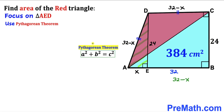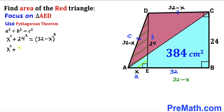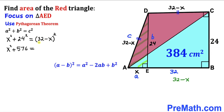Let's apply the Pythagorean theorem: A² + B² = C², where the longest leg is C = 32 − x. So we get x² + 24² = (32 − x)². Expanding: x² + 576 = (32 − x)². Applying the identity (a − b)² = a² − 2ab + b², the right-hand side becomes 1024 − 64x + x².